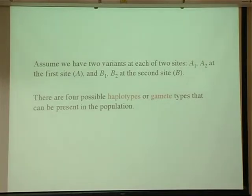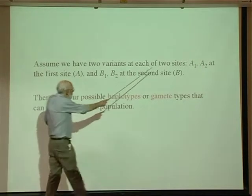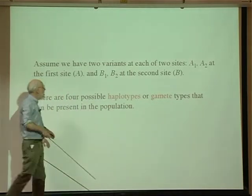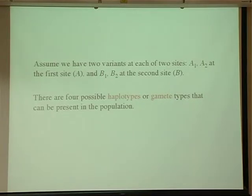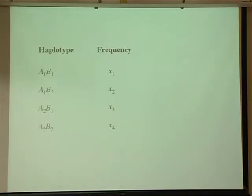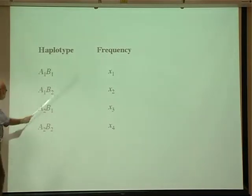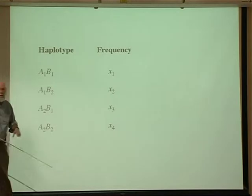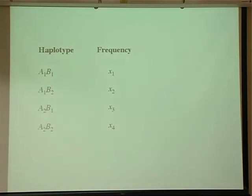We're going to look at the simplest possible step up from one site: two sites. Variant A1 and A2 at the first place in the genome, called A, and B1 and B2 at the second site. There are four combinations—four haplotypes—with frequencies X1, X2, X3, X4. Because frequencies add up to one, we actually only have three independent variables here: three degrees of freedom. We can also define allele frequencies. The frequency of A1 is the sum of X1 and X2; the frequency of B1 is the sum of X1 and X3. That gives us two degrees of freedom from the allele frequencies, suggesting there's one other piece of information needed for a full description.